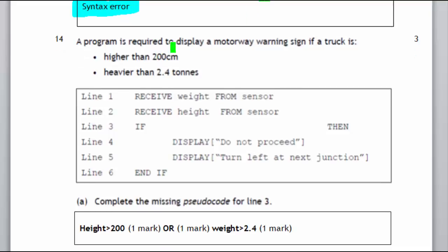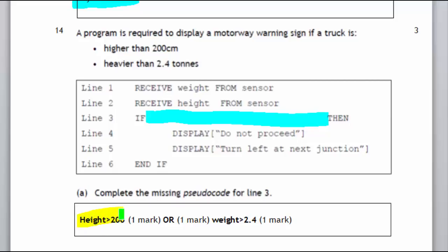Question number 14. So what we've got is a program. It's a wee warning sign if your truck is higher than 200 centimeters and it's heavier than 2.4. So there's a bit missing here. They've given you a wee space down here to actually write it. What we've got is three marks. First mark is if height is greater than 200. It's another mark for saying weight is greater than 2.4. And you get your third mark if it's or. So the height is greater than or the weight is greater than 2.4.